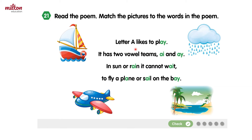Letter A likes to play. It has two vowel teams, A-I and A-Y. In sun or rain, it cannot wait to fly a plane or sail on the bay.